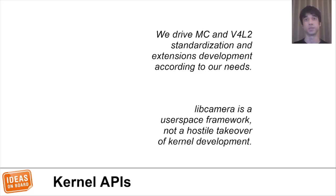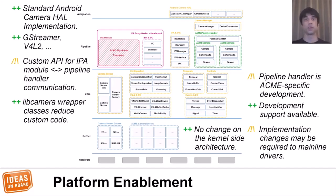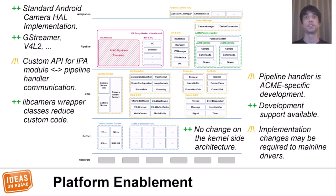LibCamera is a user-space framework, not a hostile takeover of kernel development, so we cannot help vendors bypass the requirements of the kernel community. The core of what needs to be developed by vendors is the pipeline handler and the IPA module. The pipeline handler is required to be open source, but the IPA module can still be closed source, though we don't encourage it — in that case it will not be shipped with LibCamera. There is extensive documentation on how to develop pipeline handlers and IPAs, and there are examples for both.